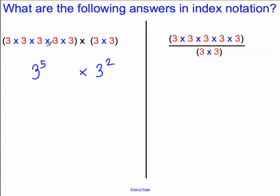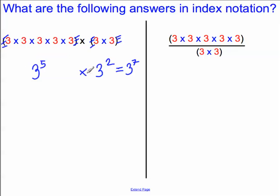However, if you look at the brackets, you can almost ignore them. Really what you've got is 3 multiplied by itself 7 times. So all of that is also equal to 3 to the power of 7. So 3 to the power of 5 multiplied by 3 to the power of 2 gives us 3 to the power of 7.